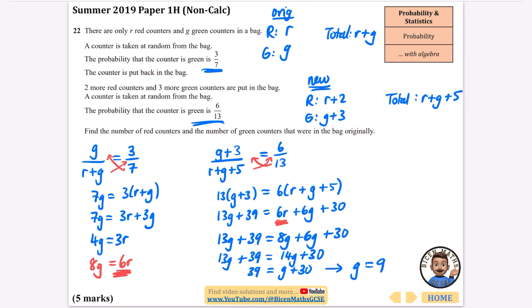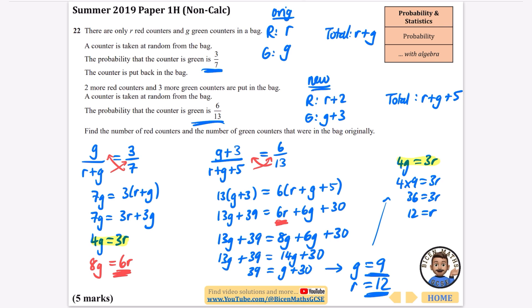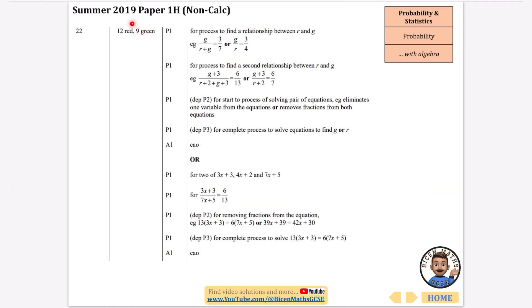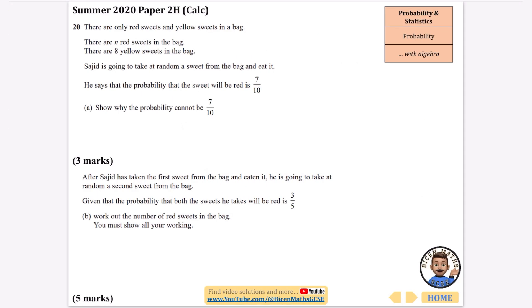Solving: 39−30=14g−13g, so g=9. Using 4g=3r: 4×9=36=3r, so r=12. There are 9 green counters and 12 red counters originally in the bag.